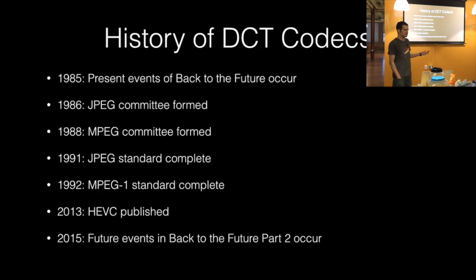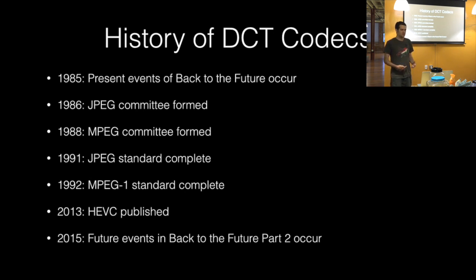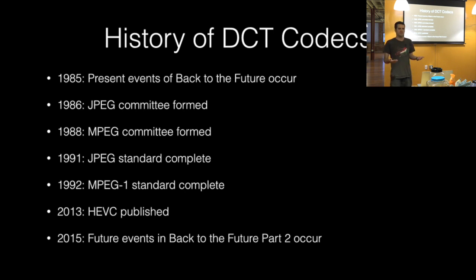The history of DCT codecs: in 1985 you have our opening slide. In 1986, the JPEG committee forms to put together a still image codec. Two years later in 1988, the MPEG committee forms to put together a video codec. MPEG winds up using a lot of the same techniques from JPEG. MPEG-1 is finalized in 1992, the year after JPEG. They just kept iterating on that design up to 2013 where HEVC came out.